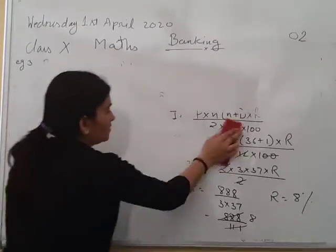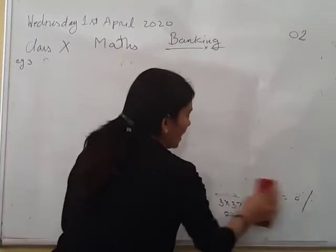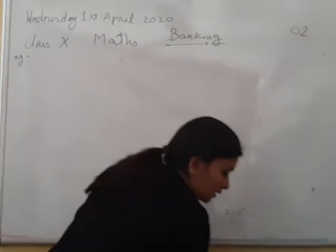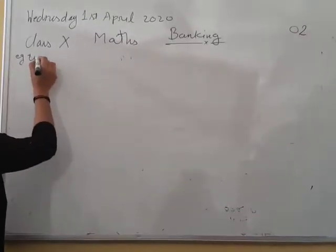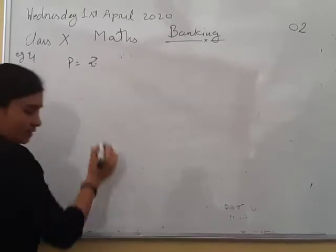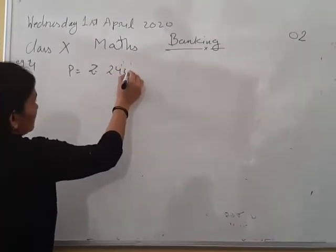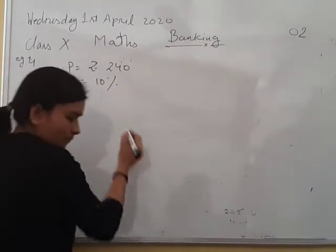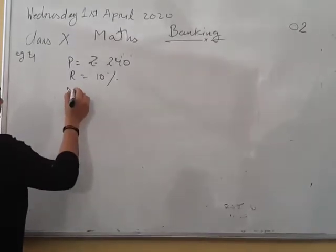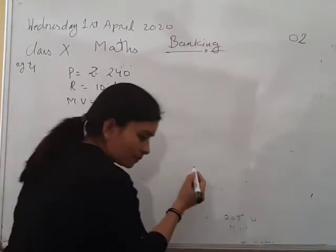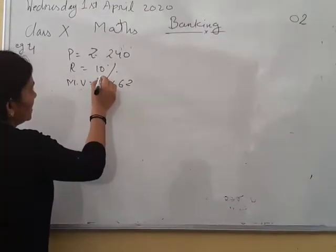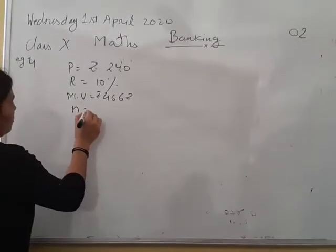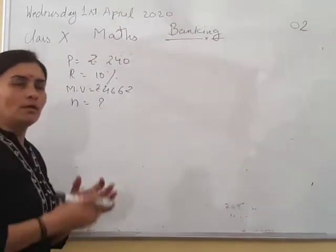Now in the same way I will explain you how to find out the number of installments. Number of installments means this is the fourth type of question in which we will take out the number of installments. Now suppose if the question is we will write what is given to you and then how to find out the number of installments.